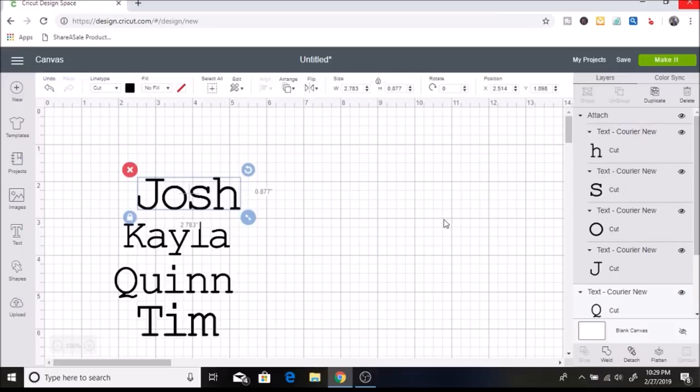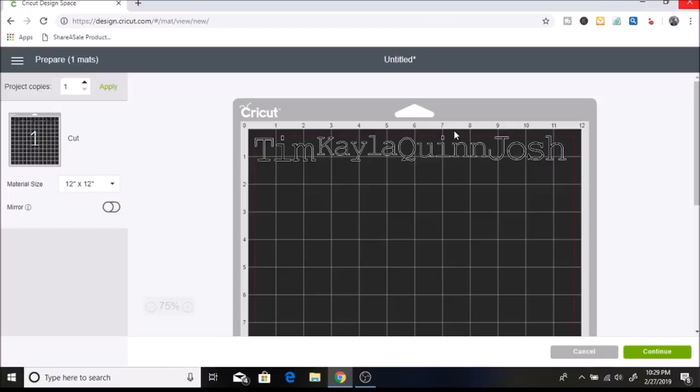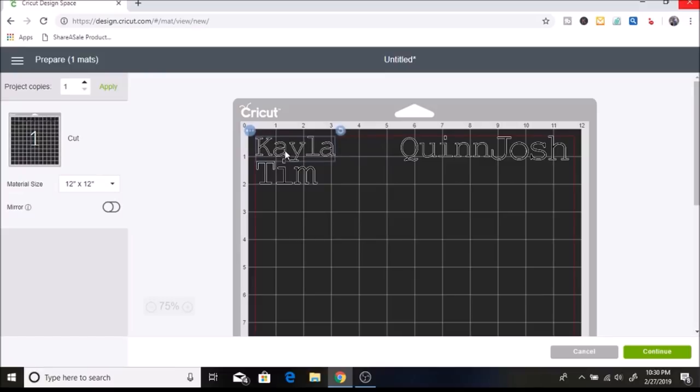And then the next thing I am going to do is I am going to click on make it and bring these over to my mat. And then it kind of just arranges it however but I feel like it is so close that I might try to move some things around a little bit. I might even just move Tim down and then move these over. I am just nervous about cutting it off. Ok so then I am going to click on continue.